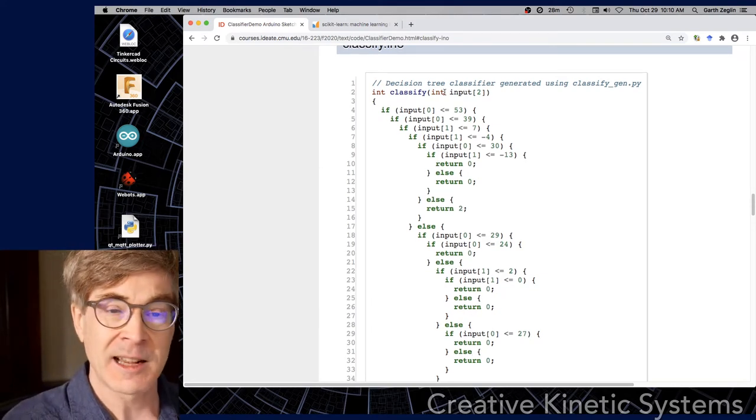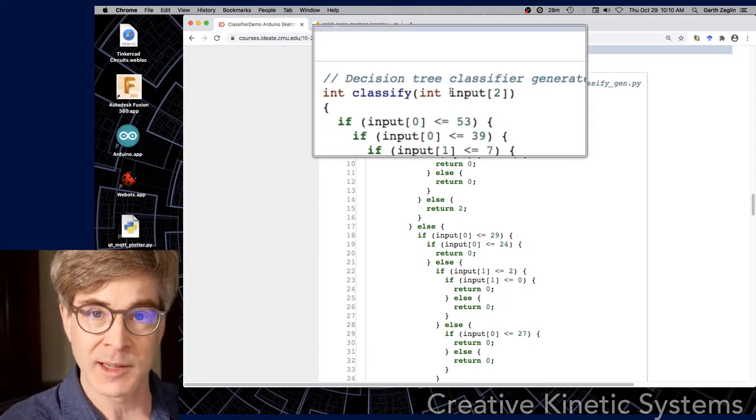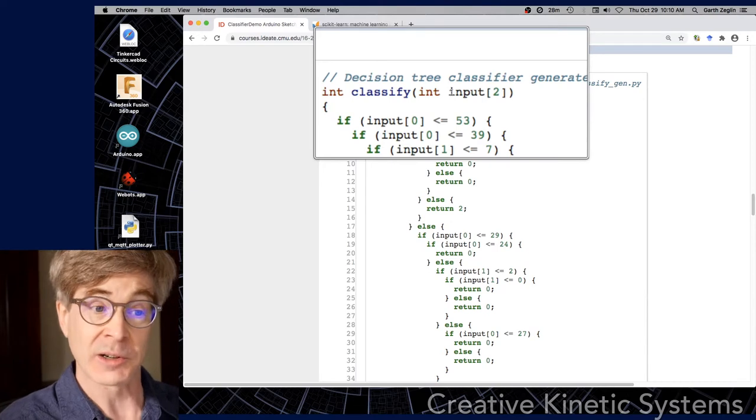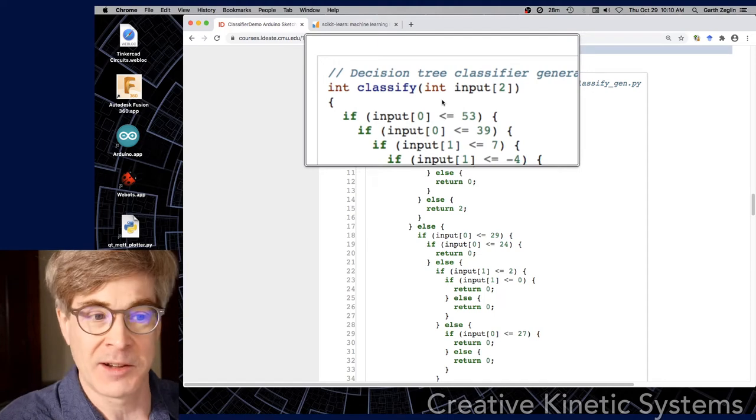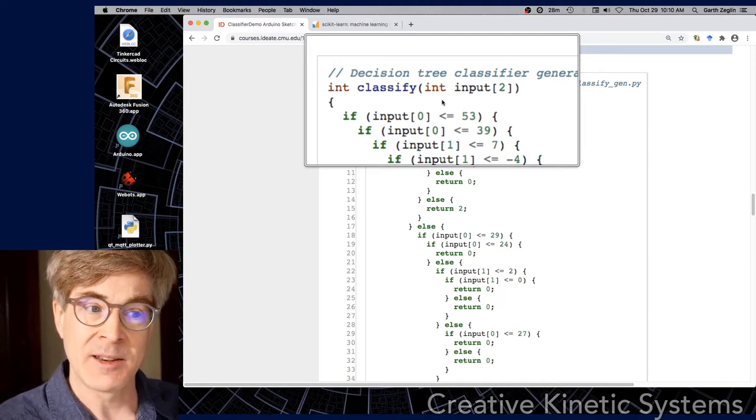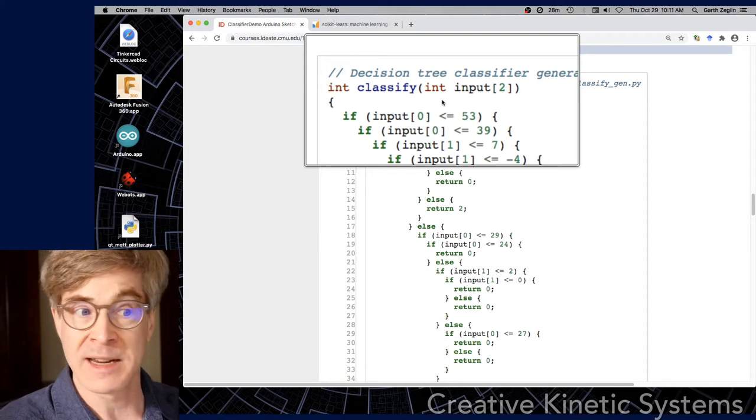The key is it's a classifier. It takes a list of two numbers as input, an array, we call it a vector. And we're using integers because this is the Arduino. We like integers. And it returns an integer, which is a label. And that meaning you assign a label is up to you. For the purposes of the code, it's just a number, an index.